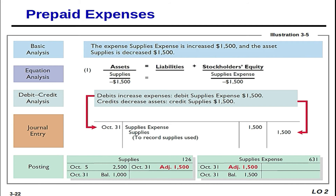We still follow Steps 1, 2, and 3 of the accounting cycle. Basic analysis: Supplies Expense increased by $1,500 and the asset Supplies decreased $1,500. Equation analysis: Supplies decreased by $1,500; Supplies Expense increased by $1,500 — shown as negative because expenses are subtracted from stockholders' equity in the accounting equation. The accounting equation remains in balance.